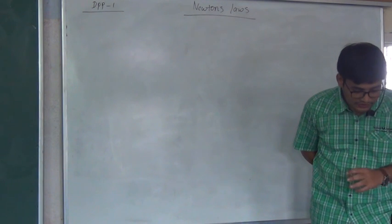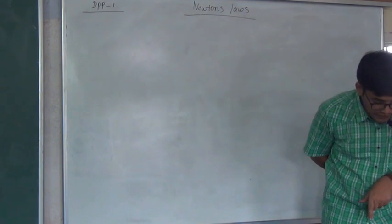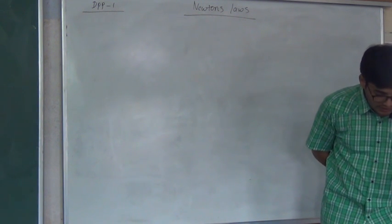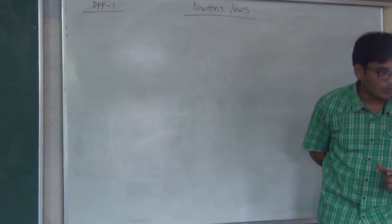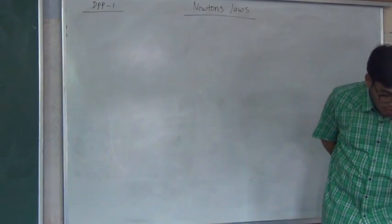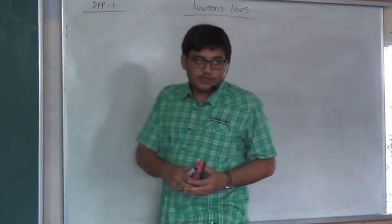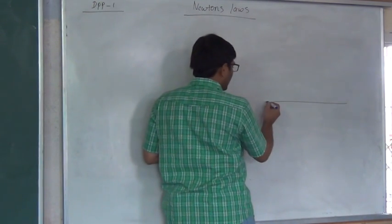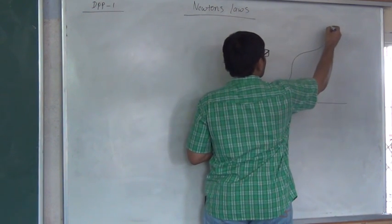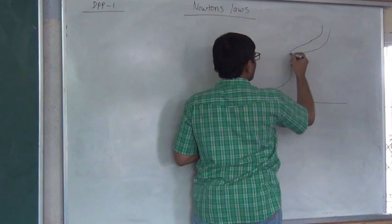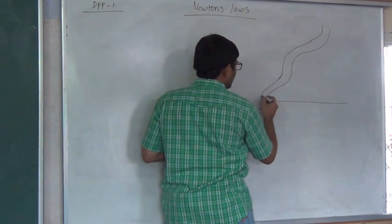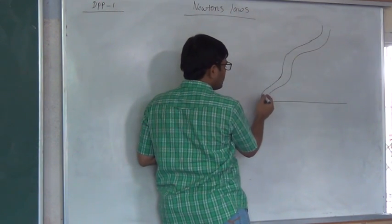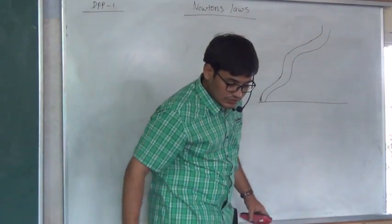A uniform rope of linear mass density lambda is placed inside a fixed curved tube in a vertical plane as shown in the figure. The rope is stationary. The tube has a certain length B and height S, and the rope is exactly fitted into this tube.